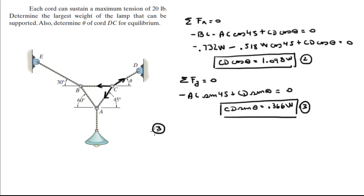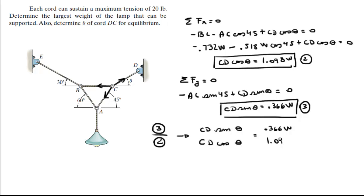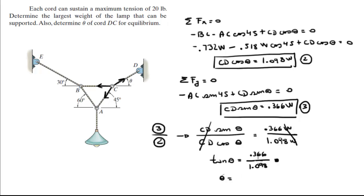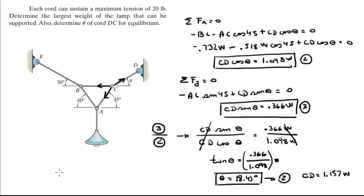Dividing equation 3 by equation 2: on top we have CD sine of theta equal to 0.366 W, on the bottom CD cosine of theta times 1.098 W. The CD's cancel out and the W's cancel out, and sine over cosine of the same angle gives tangent of theta equal to 0.366 over 1.098. So theta equals the arctangent of that fraction, which comes out to 18.43 degrees. Plugging theta back into equation 2, CD equals 1.157 times the weight.